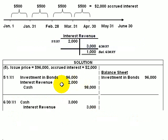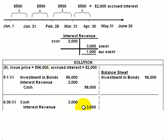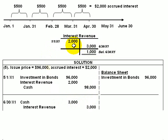If we debit the interest revenue account, then we're placing a non-normal debit into the interest revenue account. On June 30th, when the cash is received and we credit interest revenue, the credit is for all six months' interest. But four months' worth of interest have been placed in interest revenue as a debit. So net, we're going to wind up with a balance in interest revenue that is equal to just two months' interest, namely $1,000.